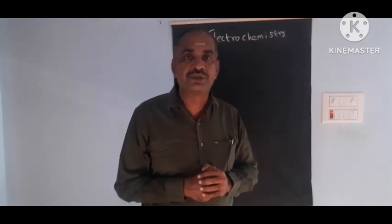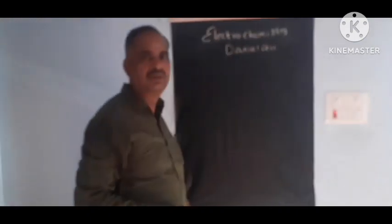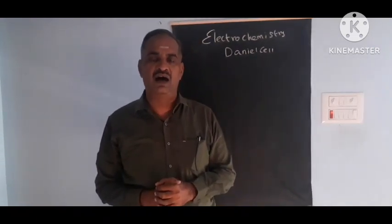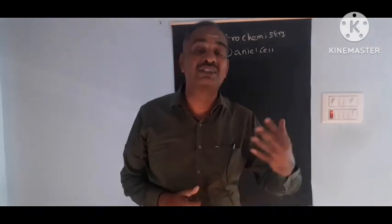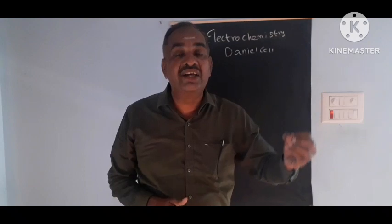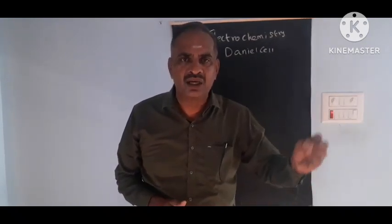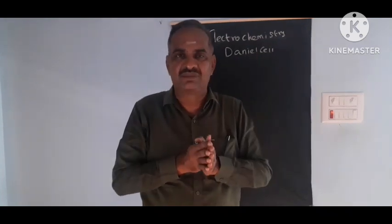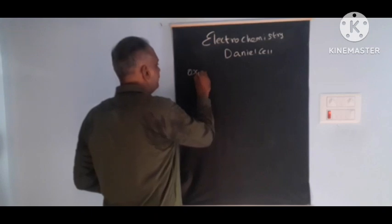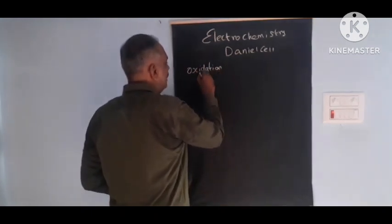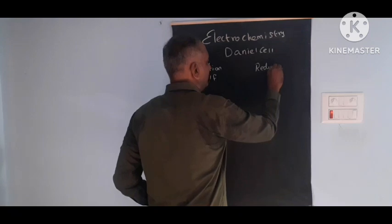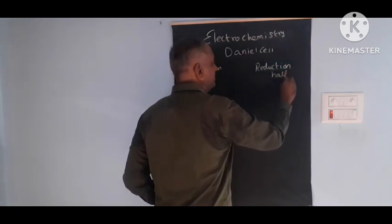In this lesson, we are going to see about Daniel's cell. In a cell, both oxidation and reduction reaction occurs. That battery is divided into two halves — one is the oxidation half and another one is the reduction half.